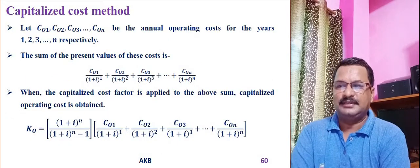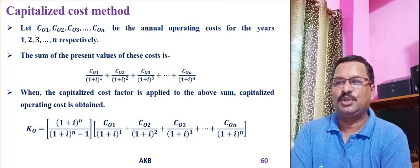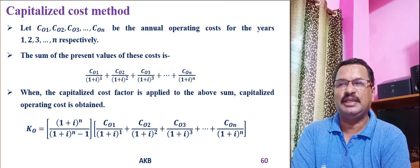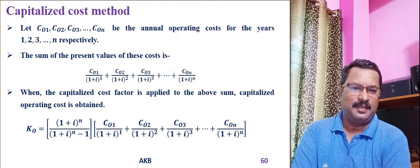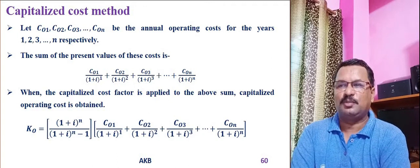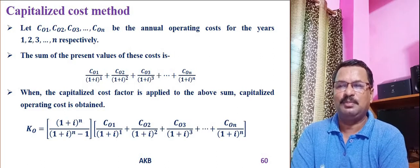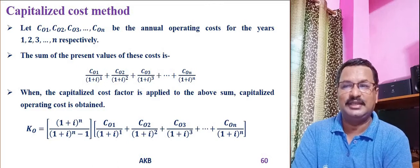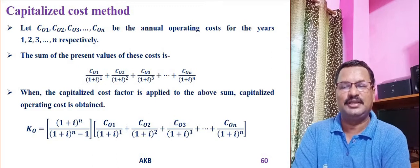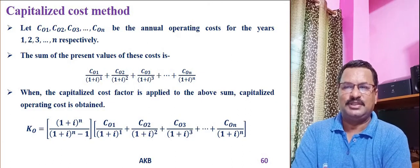Now let us get the equation for calculating capitalized cost for operating expenses. Let co1, co2, co3, and finally coN denote the annual operating costs for years 1, 2, 3, and finally N, the last year in the service life of the project. The sum of the present values will be: co1/(1+i)^1 + co2/(1+i)^2 + co3/(1+i)^3 + ... + coN/(1+i)^N.